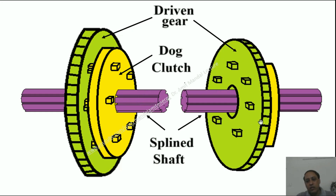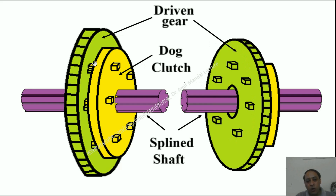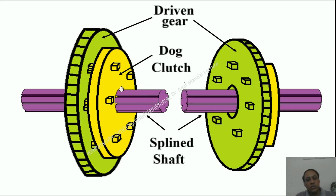The driven gear, however, is a clearance fit on the splined shaft. So if power is supplied to the driven gear, it cannot directly go to the splined shaft. It can only do so if the dog clutch is engaged with the driven gear through the face teeth. Power from the driven gear goes to the dog clutch and then to the splined shaft — this is how the power transfer takes place.